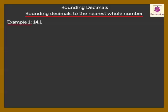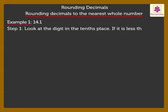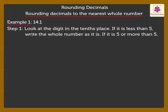Look at the given number. Step 1: Look at the digit in the tenths place. If it is less than 5, write the whole number as it is. If it is 5 or more than 5, add 1 to the whole number.